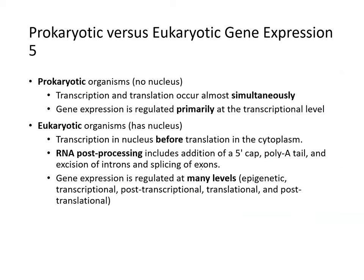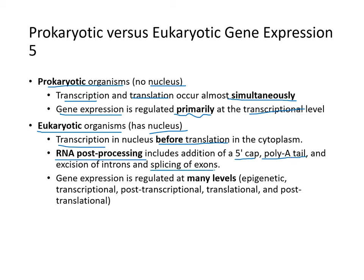Comparing prokaryotic and eukaryotic gene expression: in prokaryotes, which have no nucleus, transcription and translation occur almost simultaneously, and gene expression is regulated primarily at the transcription level. In eukaryotes, transcription occurs in the nucleus before translation, and RNA post-processing must occur — including a 5' cap, poly-A tail, and splicing. Gene expression is regulated at many levels: epigenetic, transcriptional, post-transcriptional, translational, and post-translational.